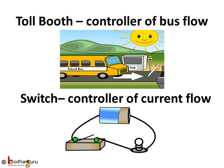Also, the flow of electric current can be started or stopped using a switch. So the switch acts like a controller of current, like the toll booth for the bridge crossing.